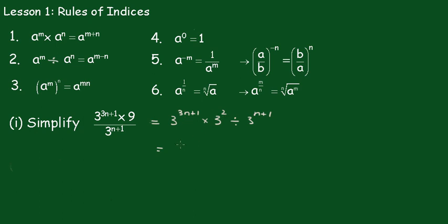Adding the indices together, we get 3 to the 3n plus 3 divided by 3 to the n plus 1. Subtract the indices here: 3 to the 3n plus 3 minus, put a bracket around here, n plus 1.